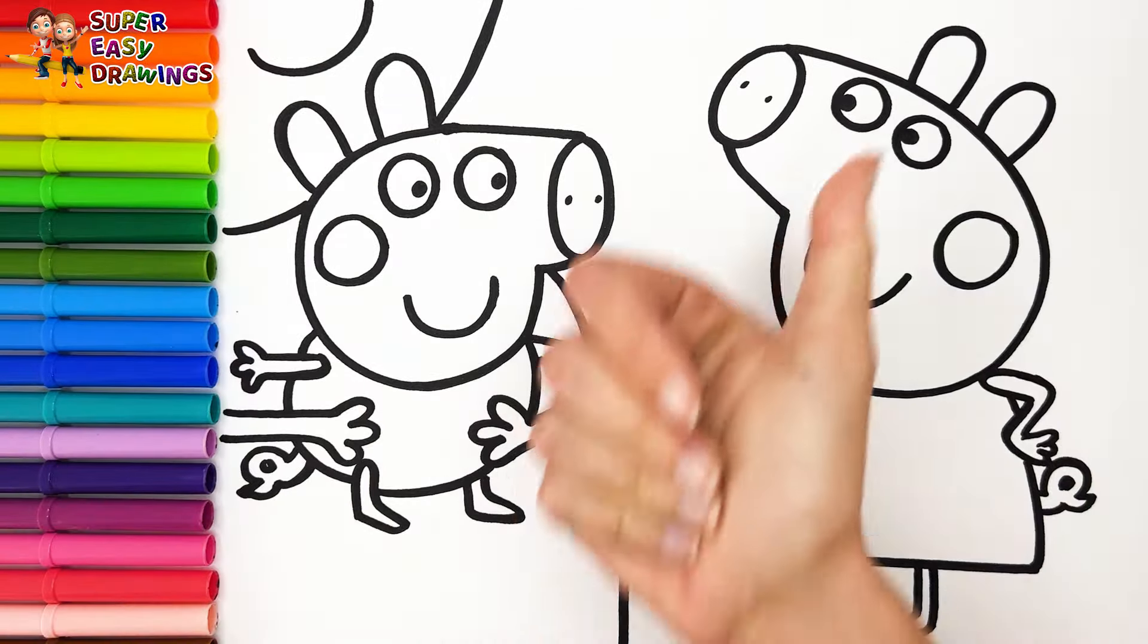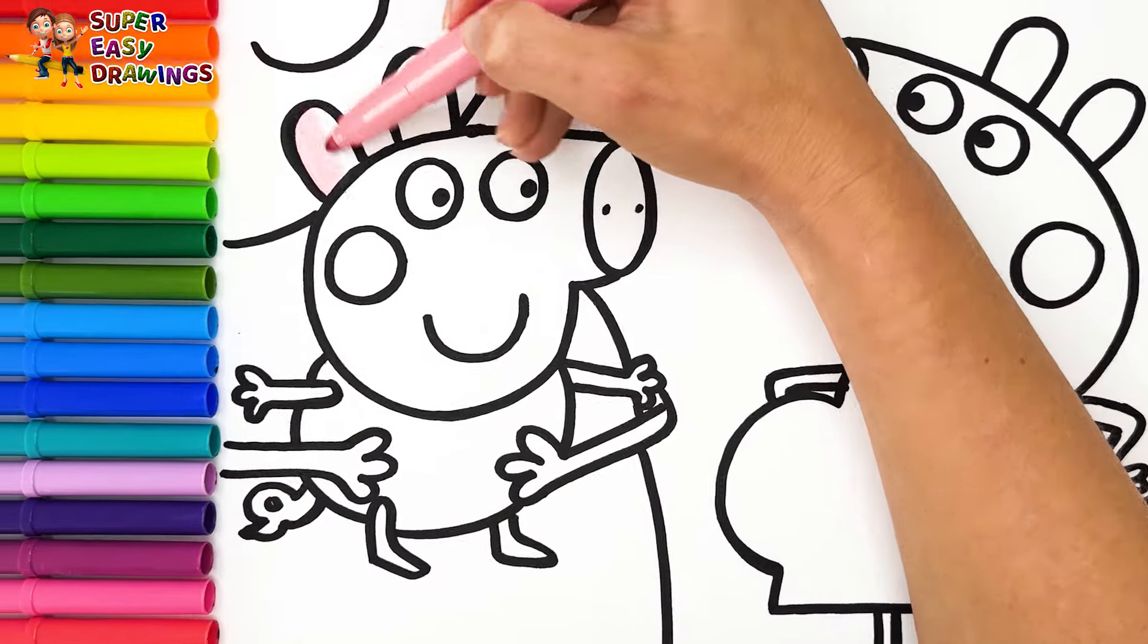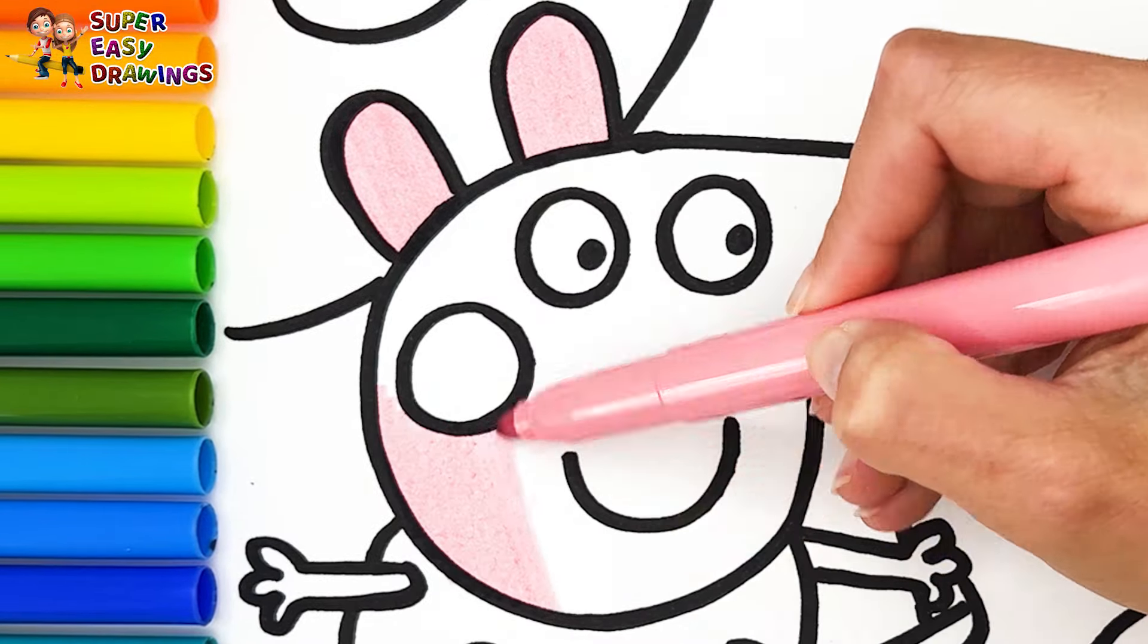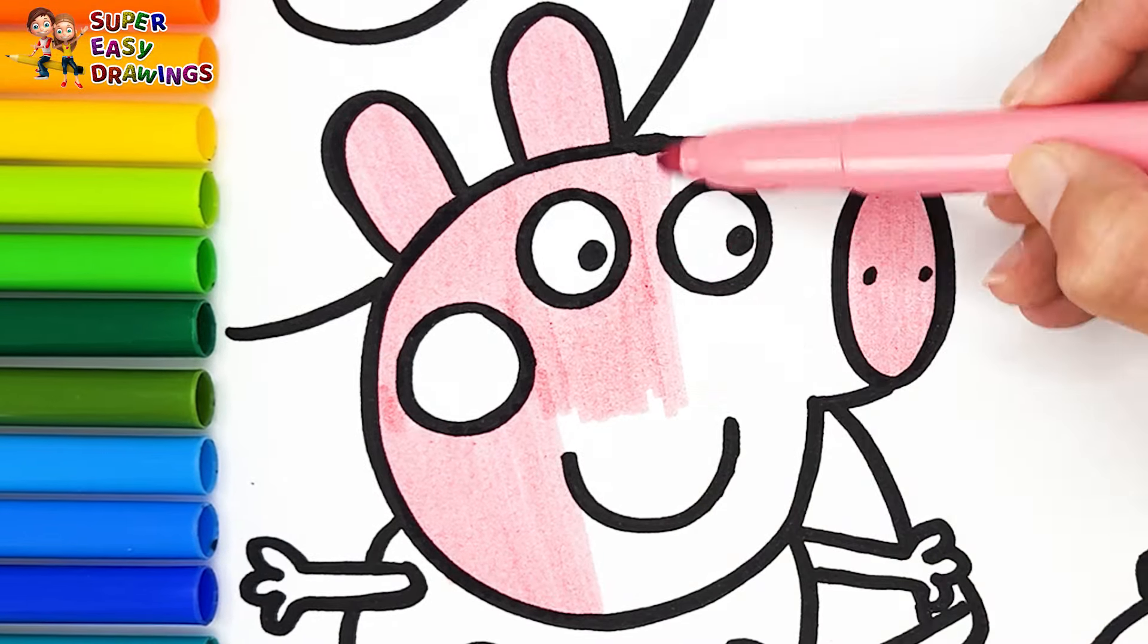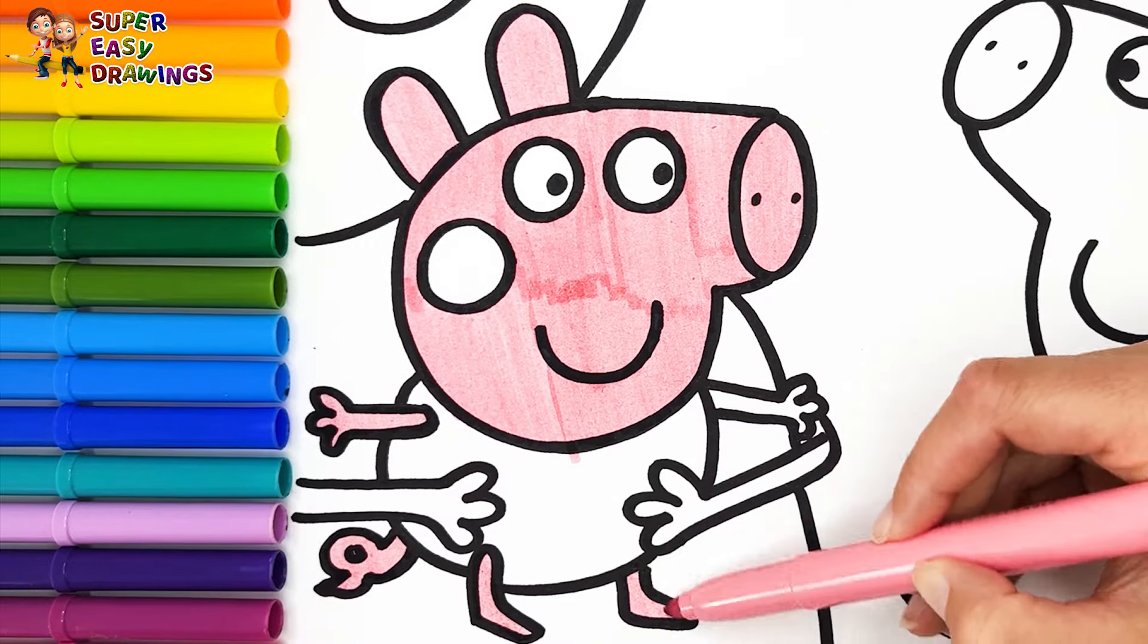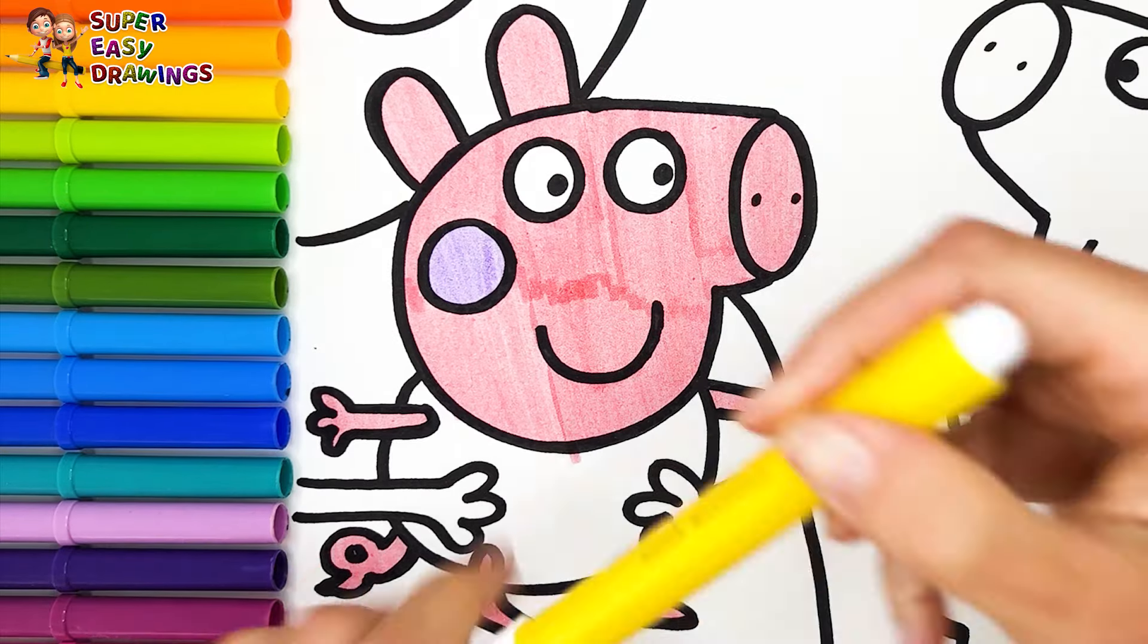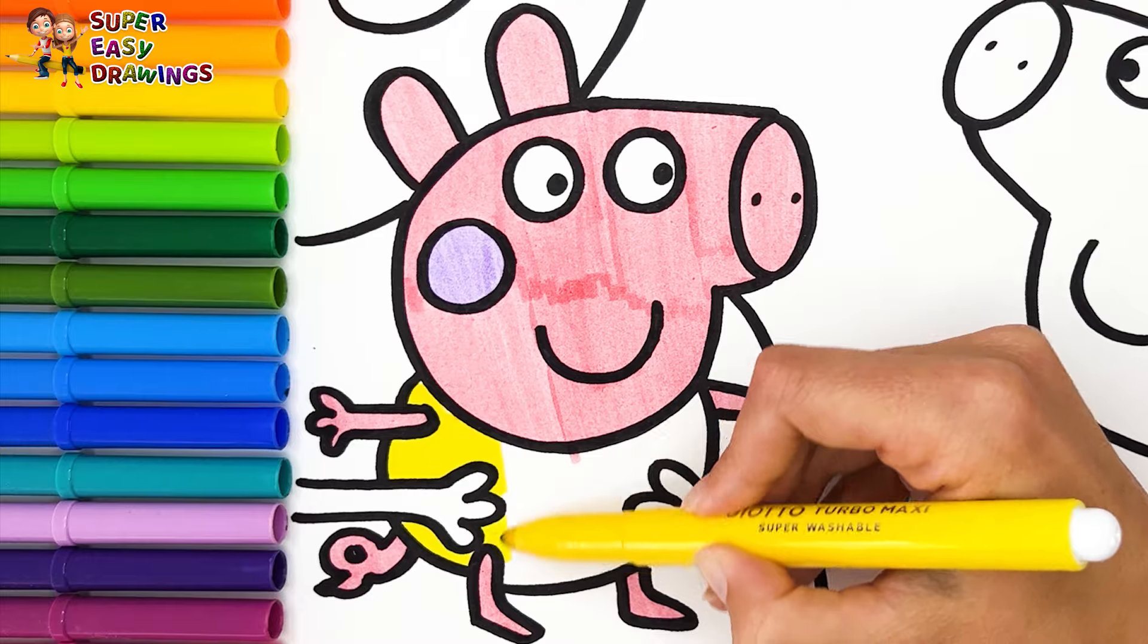Let's start coloring. First I color Baby Alexander. To start I use this pink marker for his skin. Then I use light purple for the cheek. The baby's dress is going to be yellow.